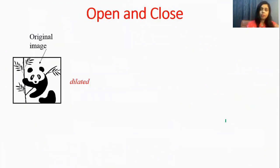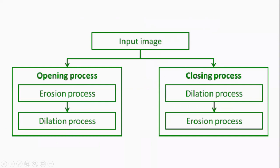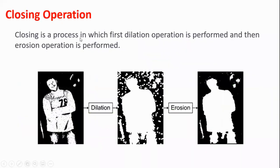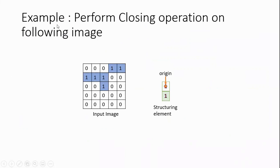If we want to perform closing operation, in closing operation first we perform dilation process and after that we perform erosion process. Closing operation is a process in which first dilation operation is performed and then erosion operation is performed. Let's solve this example: perform closing operation on the following image. The blue pixels indicate one and white indicates zero. This is our structuring element and this is the origin of the structuring element.